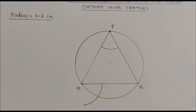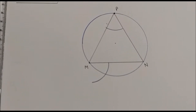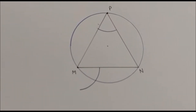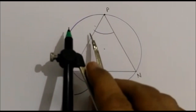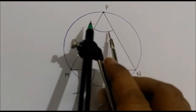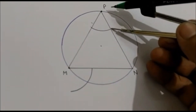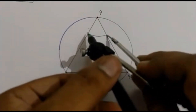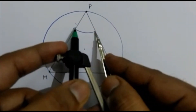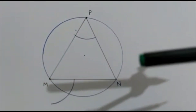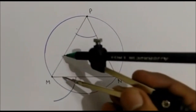Now after that, we will take the length of this arc — from this end to this end. Take this distance with the compass.